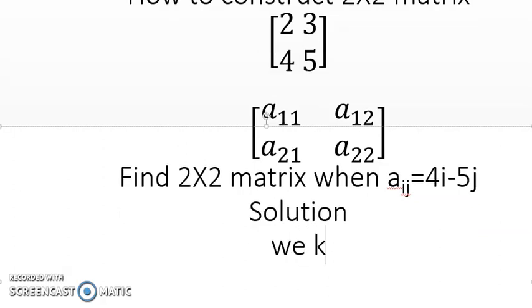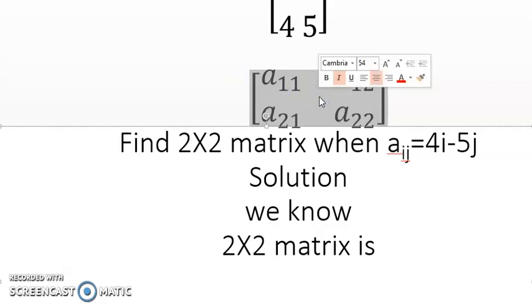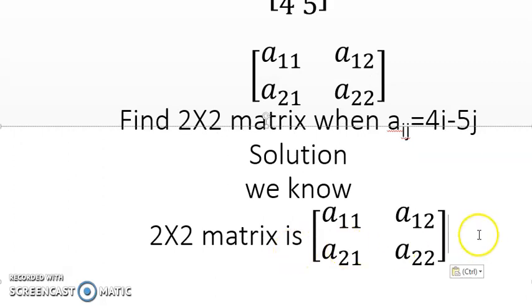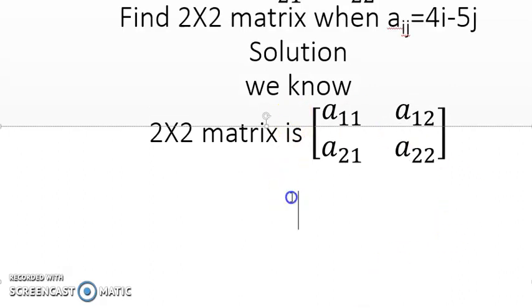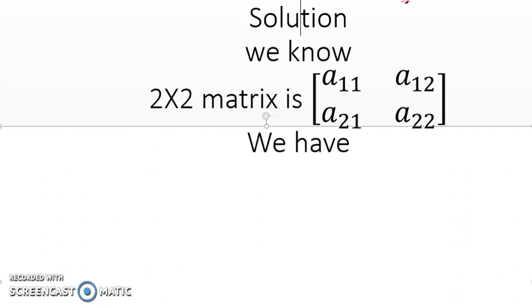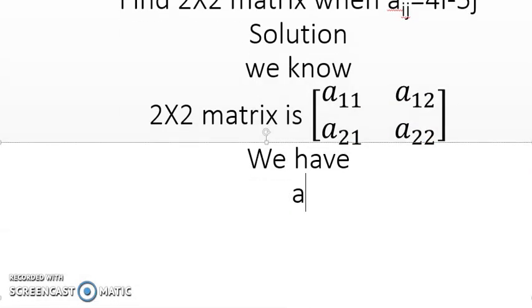So let's see here. We know 2 by 2 matrix is [a_11, a_12; a_21, a_22]. We have a_ij equals to 4i minus 5j. Now we will find all A_11, A_12, A_21, A_22. So now let's see here.